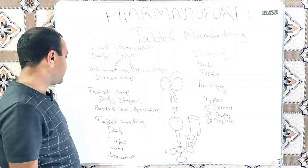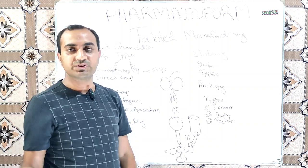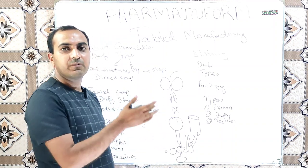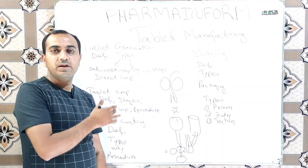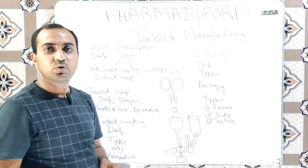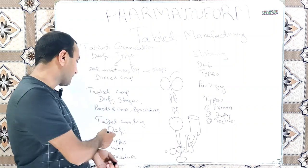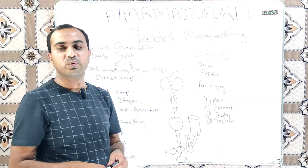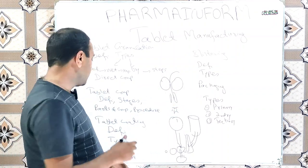The next process is tablet coating. These processes are in sequence: granulation produces granules, then compression produces tablets, and after compression we have the coating process. Some tablets are used as core tablets where coating is not required; for others, coating is required. Tablet coating is the process in which a thin layer of polymer is applied over the tablet surface using a tablet coating system.